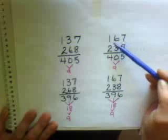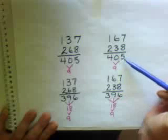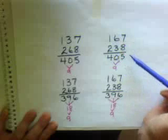Same here. 1, 6, 7, 2, 3, 8, equals 4, 0, 5. Never used the same number twice.